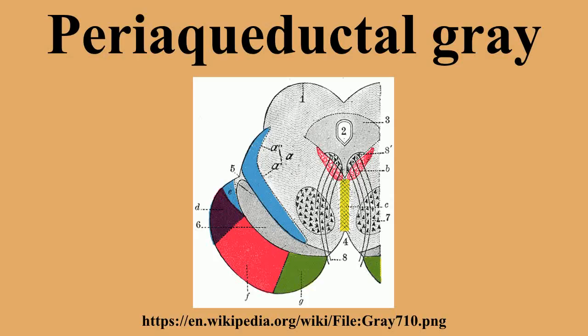Located in lamina 2, when activated, these interneurons release either enkephalin or dynorphin, which bind to mu opioid receptors on the axons of incoming C and A-delta fibers carrying pain signals from nociceptors activated in the periphery. The activation of the mu opioid receptor inhibits the release of substance P from these incoming first-order neurons and, in turn, inhibits the activation of the second-order neuron that is responsible for transmitting the pain signal up the spinothalamic tract.